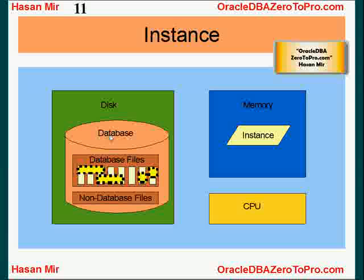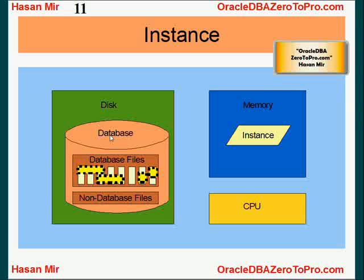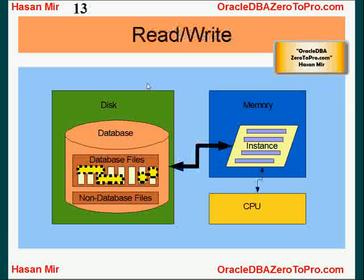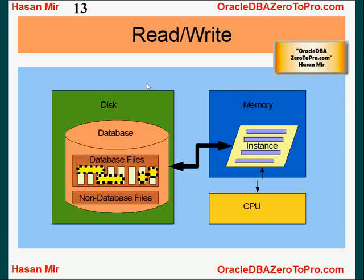Now let's talk about instance. Most people use the word instance and database interchangeably, but they are two different things. Database is simply a collection of files. Instance is the software — the programs running in memory. An Oracle instance consists of multiple processes, and the whole collection is called an instance. The instance talks to the database — it may write new information to the database or read information out of it.